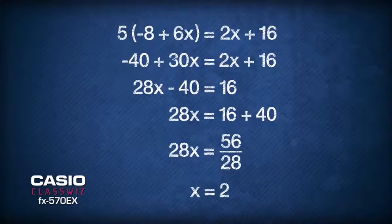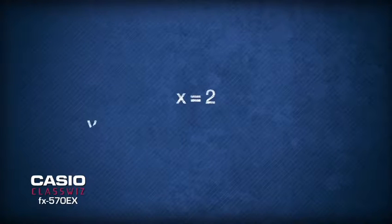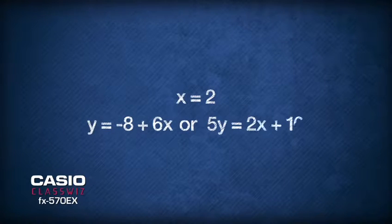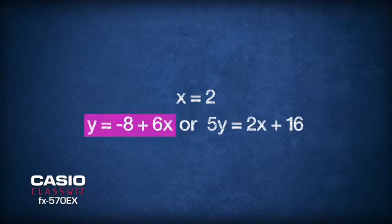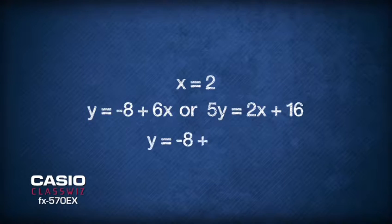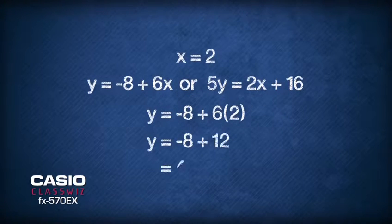Now that we have found the x-coordinate of the point of intersection, we can substitute x equals 2 into the equation of either y equals negative 8 plus 6x, or 5y equals 2x plus 16. It is easier to substitute x equals 2 into the equation y equals negative 8 plus 6x. After substitution, we get y equals negative 8 plus 6 times 2, which solves to y equals 4.